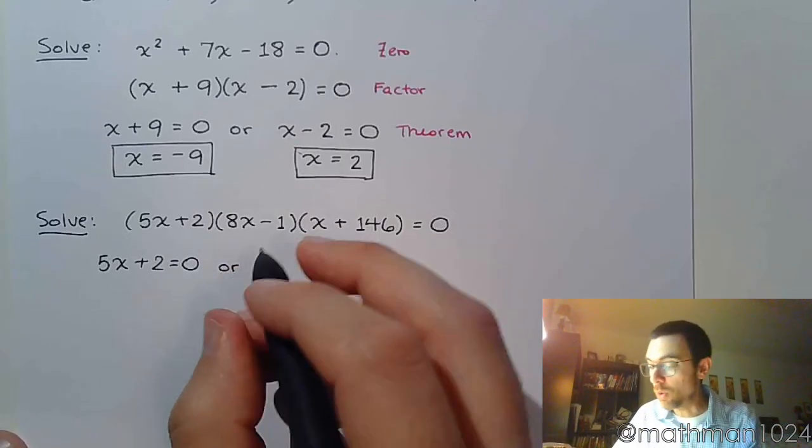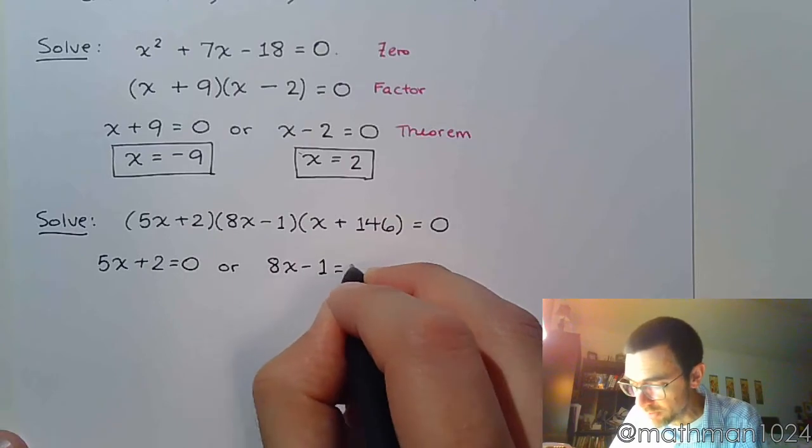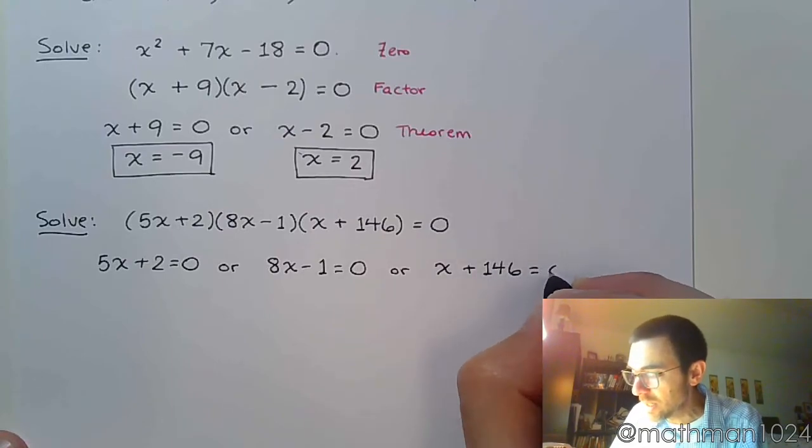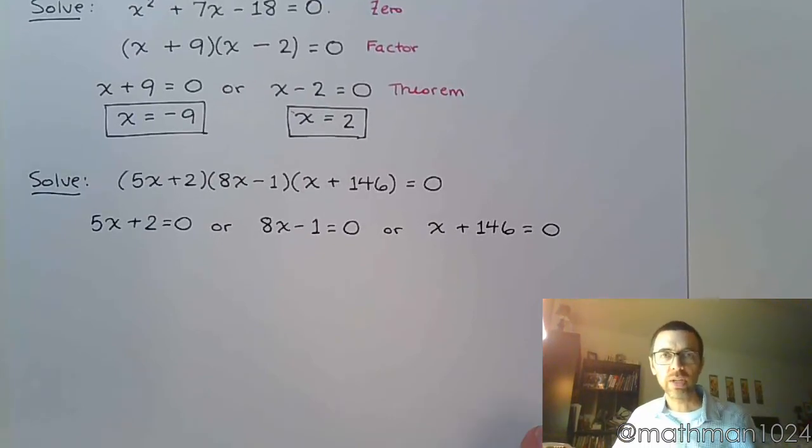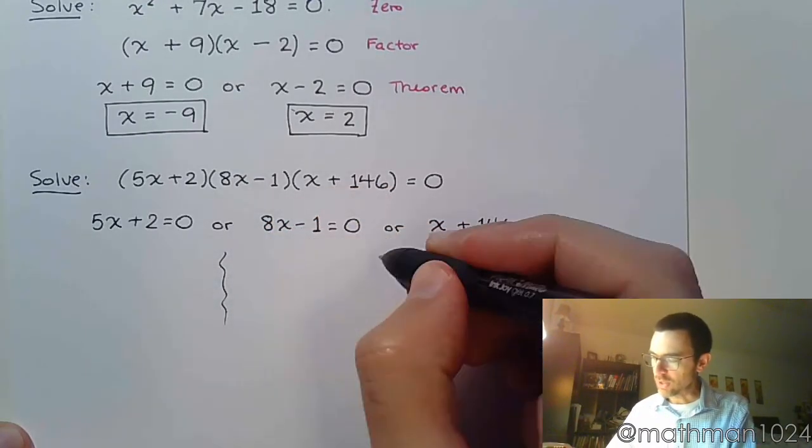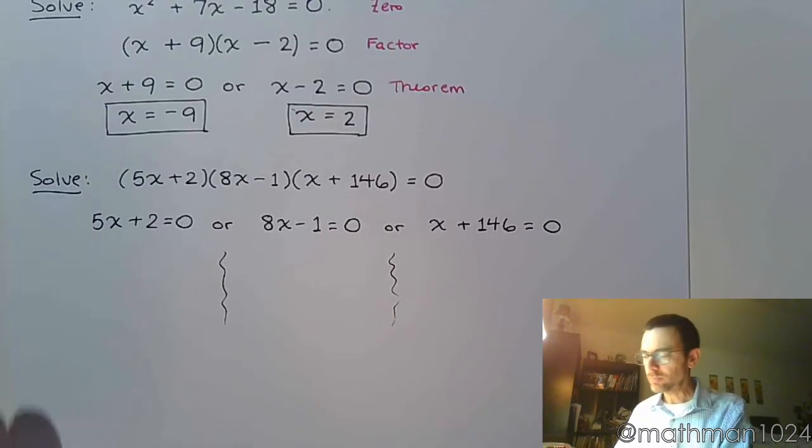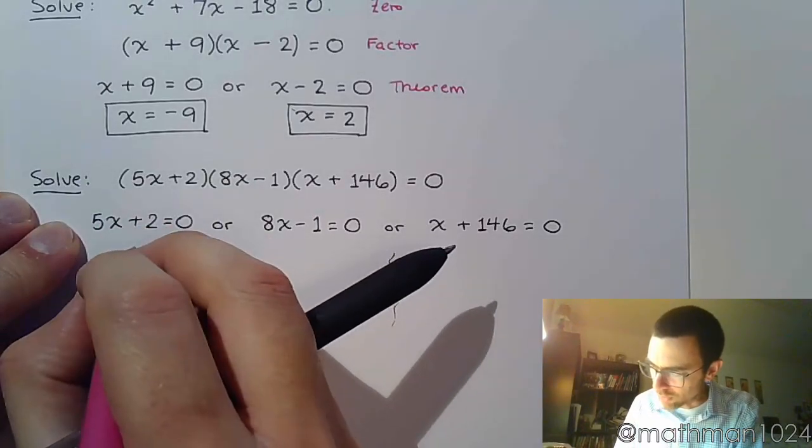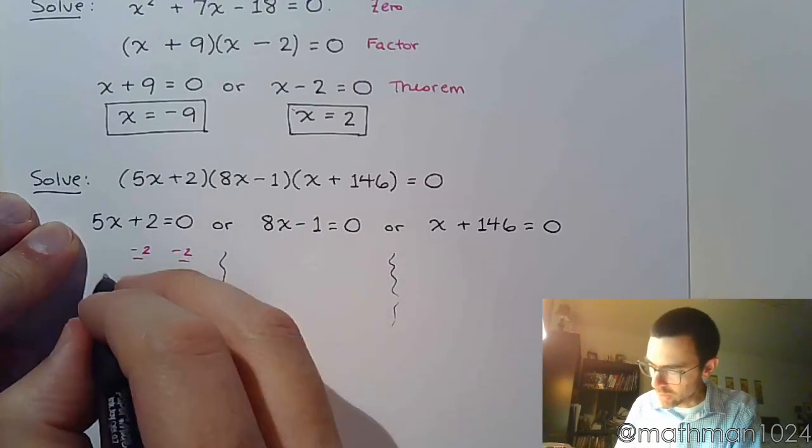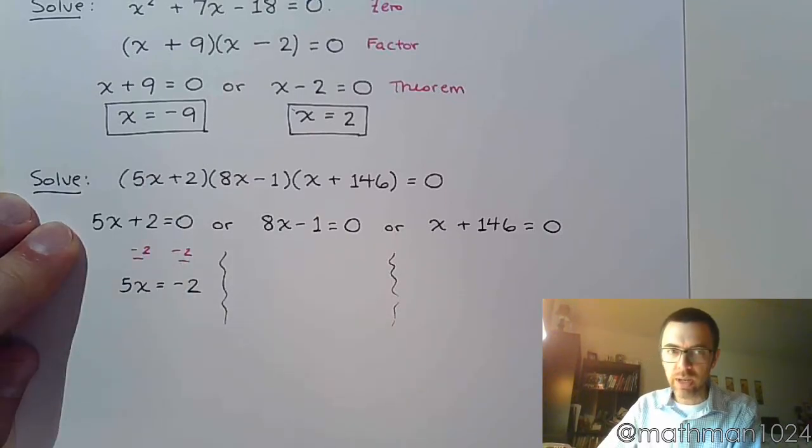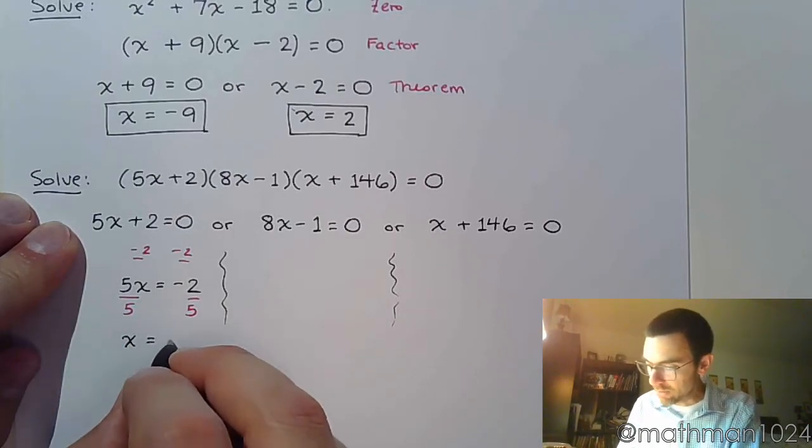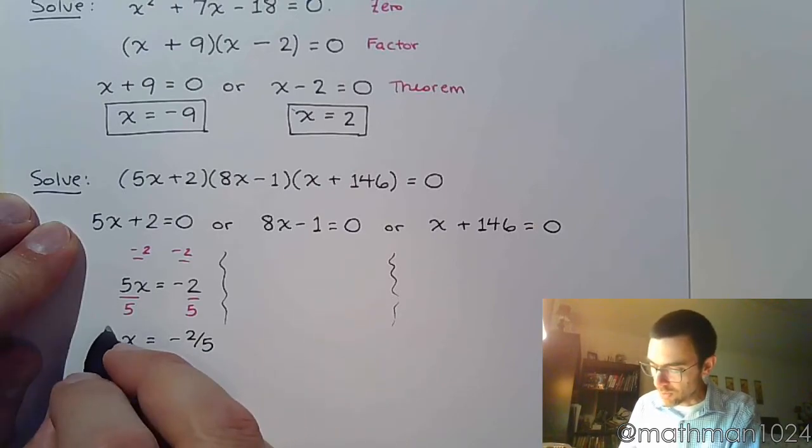Now, we apply the theorem. The theorem says you set each factor equal to zero. So, 5x + 2 = 0 or 8x - 1 = 0 or x + 146 = 0. You've got these three different factors. Each one's going to give you a different solution for the original problem. So, just one at a time, you're going to work these out. And again, you might be able to do all of this in one step. If you need to take separate steps, that's fine. If you feel more comfortable saying, I've got to subtract 2 on both sides, so 5x = -2 and then divide both sides by 5—if this is what's going to work for you, then so be it. I have no problem with that. So, x = -2/5.